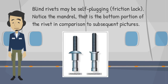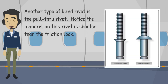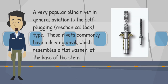Blind rivets may be self-plugging friction lock — notice the mandrel, which is the bottom portion of the rivet. The thickness of the material being riveted determines the overall length of the shank. As a general rule, the shank should extend beyond the material thickness approximately 3/64 inch to 1/8 inch before the stem is pulled. Another type is the pull-through rivet, whose mandrel is shorter than the friction lock. A very popular blind rivet in general aviation is the self-plugging mechanical lock type, which commonly has a driving anvil resembling a flat washer at the base of the stem.